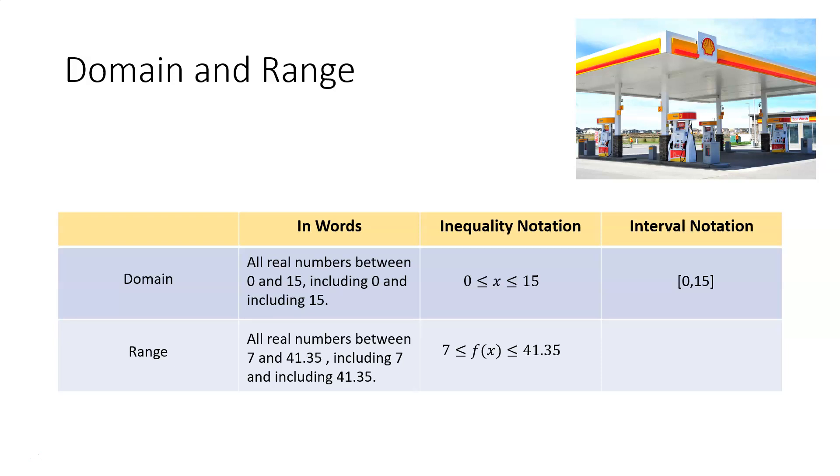And lastly, interval notation is going to look like this. 7 is going to be on the left-hand side, and then a comma, and then 41.35. And again, because we're including both of those values, we're going to put them in between a set of brackets.